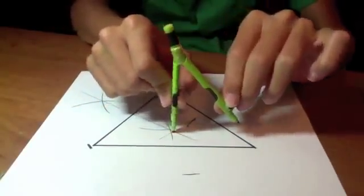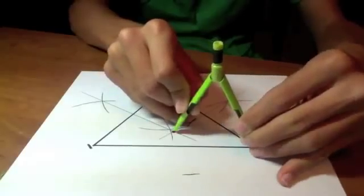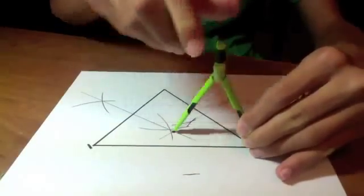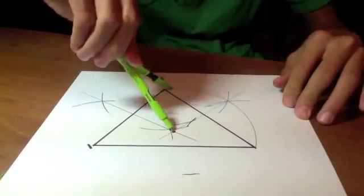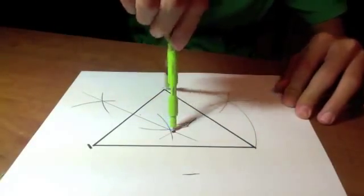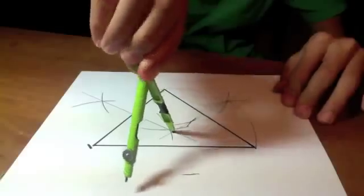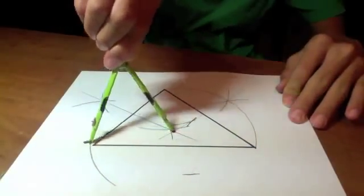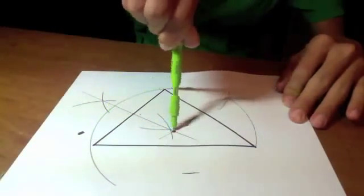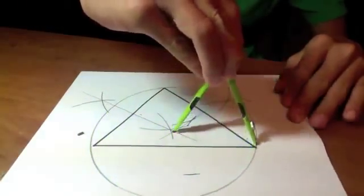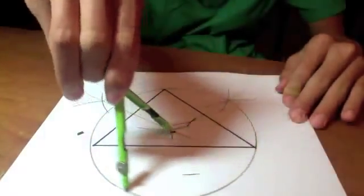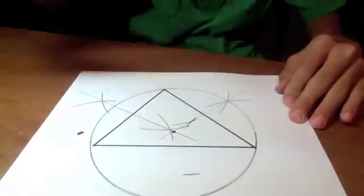Then you can draw a circle all the way around, and the circle will touch all three corners of the triangle, making a perfect circle. And that is how to construct a circle circumscribed around a triangle.